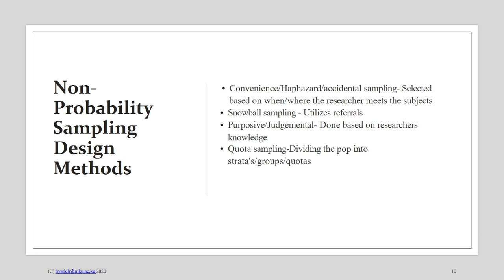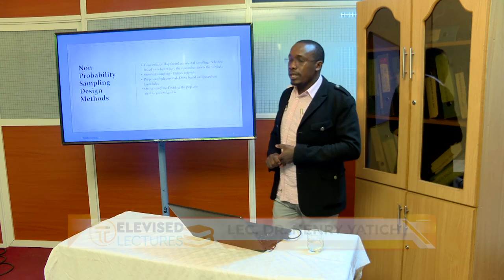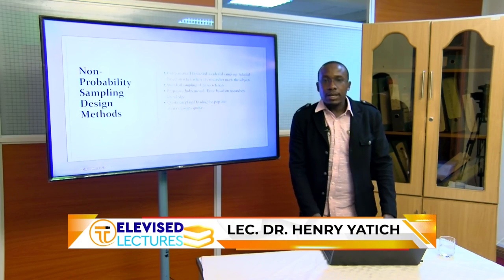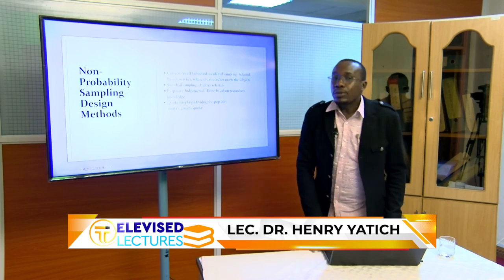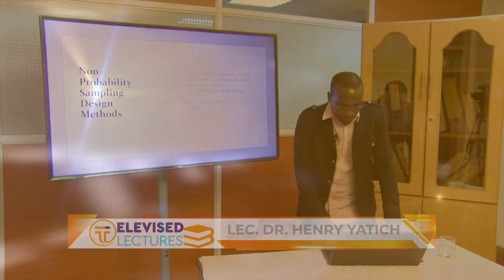Lastly, quota sampling is where you divide your population into groups — say 400 companies in Nairobi — and simply divide them into four quarters of 100 each, then decide to pick one quarter of 100 companies. It is subjective because you are not giving every item the chance to be selected. Having said that, we have come to the end of our presentation today. Thank you very much for listening, and let's meet next time on our Part 5 series of research methodology.